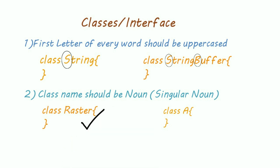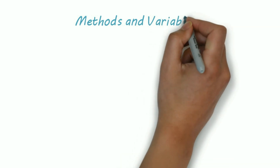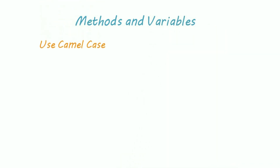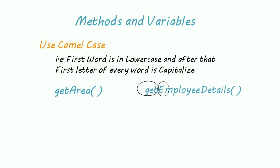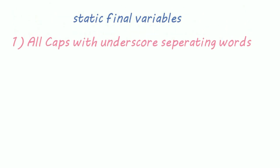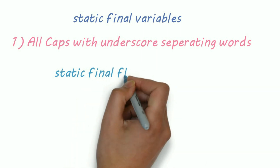For methods and variables, we use camelCase — that is, the first word is in lowercase, and after that the first letter of every word is capitalized. For example, getArea or getEmployeeDetails, where E and D are uppercase.